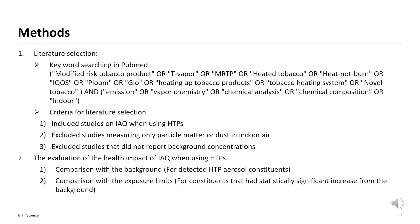The aim was to evaluate the impacts of these constituents on IAQ and human health from a common standpoint. Literature selection was conducted in PubMed using specific keywords. The criteria for selection were studies on indoor air concentrations when using HTPs. Studies that only measured particulate matter or dust on indoor air and did not report indoor air concentrations in the background were excluded. The health impact evaluation compares constituents with statistically significant increases from the background against the exposure limits of each constituent.